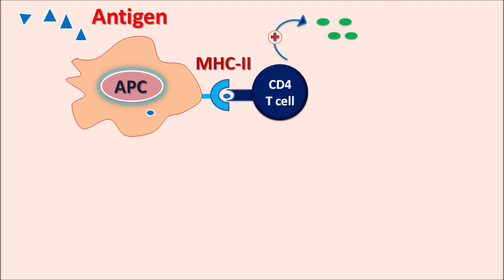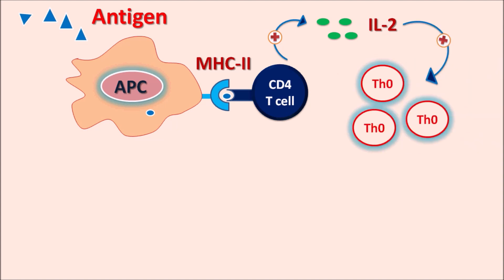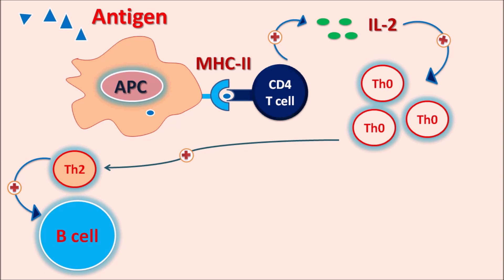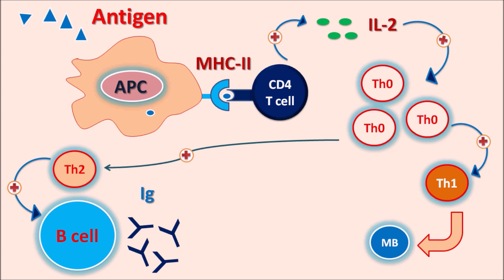The CD4 T cells release an important mediator, IL-2 (interleukin-2), which stimulates and promotes T helper lymphocyte 0 (Th0). Th0 can be split into two components by various cytokines. One pathway is the activation of Th2 lymphocytes, which activate B cells; these B cells are converted into plasma cells that release IgG antibodies. In this way, whenever an antigen is presented, the immune response is stimulated to release antibodies. Th0 can also be converted into Th1 lymphocytes, which generate memory B cells that store the memory of the antigen for future responses.